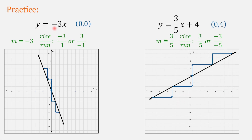For y equals negative 3x, this is in slope-intercept form: y equals negative 3x plus 0, so the b value is 0 and the y-intercept is at the origin, (0, 0). The slope is negative 3, written as negative 3 over 1 — go down 3 to the right 1. Or written as 3 over negative 1 — go up 3 to the left 1. Both are equivalent to negative 3, and with a negative slope, the line goes down from left to right.